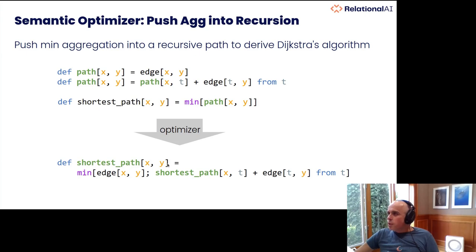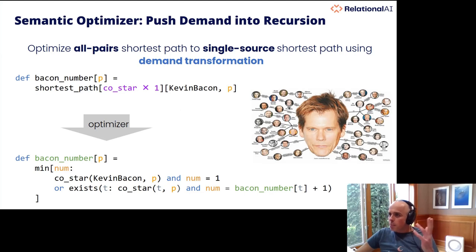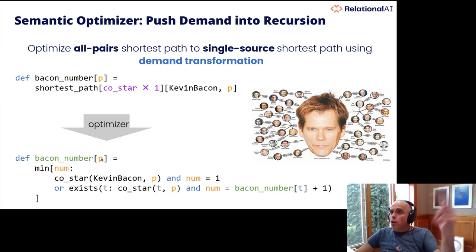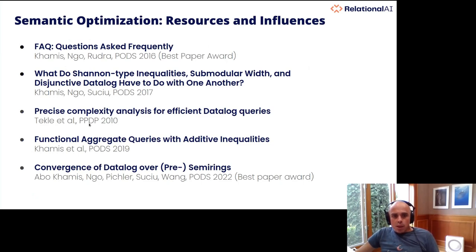This extends further: the all-pairs shortest path example is very nice but doesn't scale — if you have a graph of a million nodes, there are a lot of pairs. Typically you want a more specific path. We support that with the magic transformation. As an example, for Kevin Bacon's degrees of separation, you invoke shortest paths but ask in the outcome only for Kevin Bacon. Our system is able to specialize the computation to include the fact that only Kevin Bacon is the starting point. We also have a paper this year that won the best paper award, particularly on recursion computations.